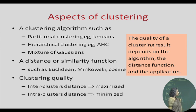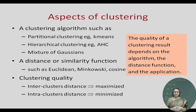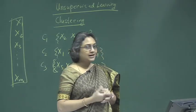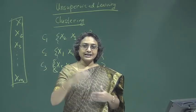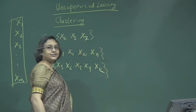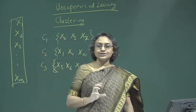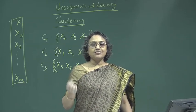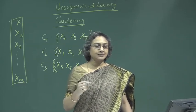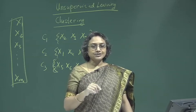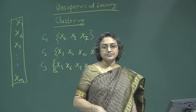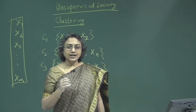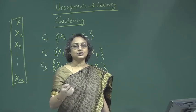Secondly, there is a distance or similarity function which the clustering algorithm uses or tries to optimize. Elements in a cluster are similar to each other, and elements belonging to different clusters are different from each other. To measure how similar or dissimilar two elements are, we use a metric — possible measures include Euclidean distance, cosine distance, Pearson correlation coefficient, and so on. Thirdly, one has to have a way of evaluating how good the clustering is.